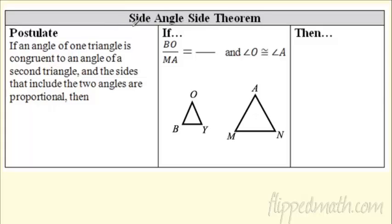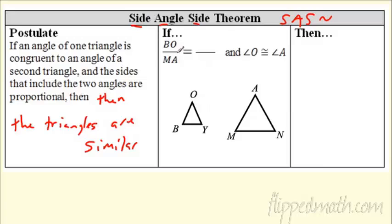Fantastic. Moving on, we have two more of these. Notice this. We had this before, didn't we? Side, angle, side. Same kind of thing, but this is side, angle, side similarity. So how does this one work? If an angle of one triangle is congruent to an angle of a second triangle, and the sides that include the two angles are proportional, wow, it's a mouthful, then the triangles are similar.